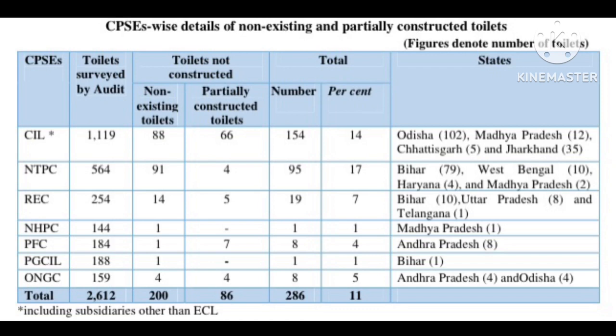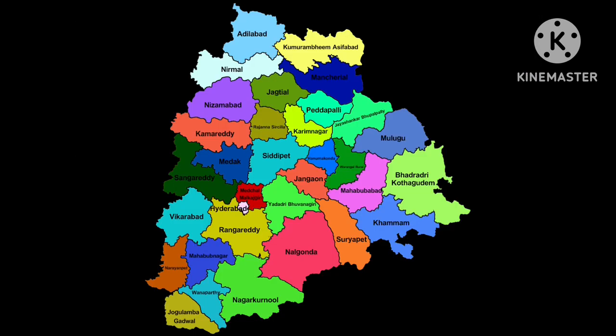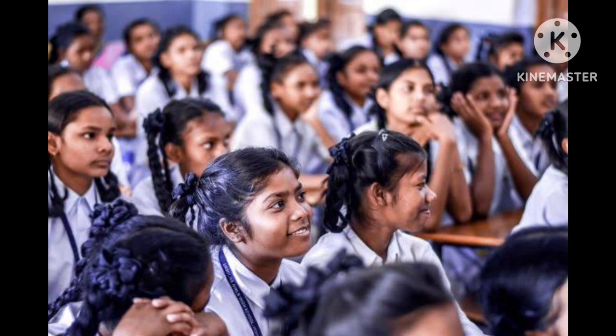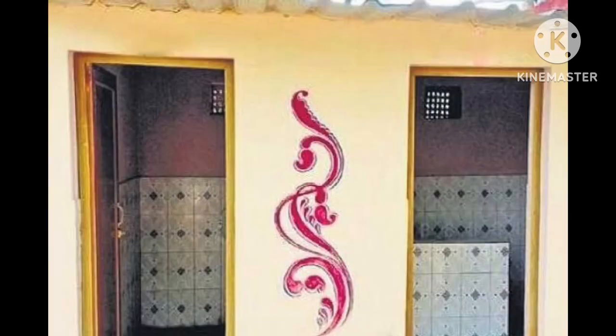The above table shows the non-existing toilets, partially constructed toilets, and the number of toilets not built in rural area schools. In Telangana, Swachh Bharat Shala is implemented on the last Saturday of every month, where awareness of hygiene, cleaning of classrooms, school premises, and maintenance of toilets are all carried out.